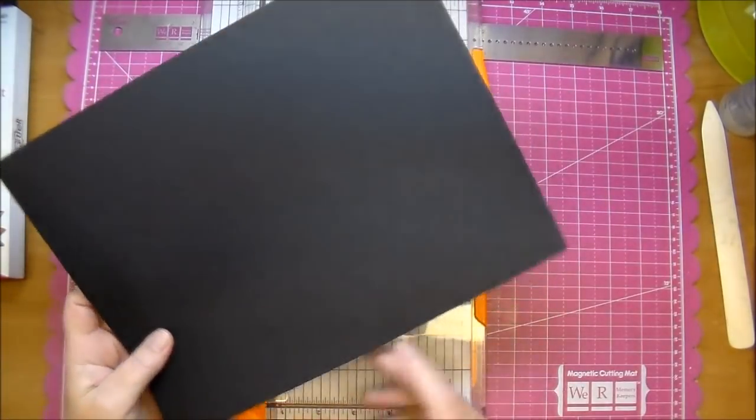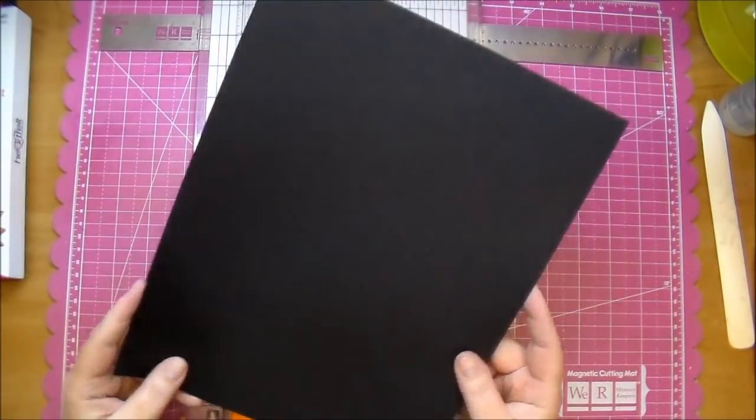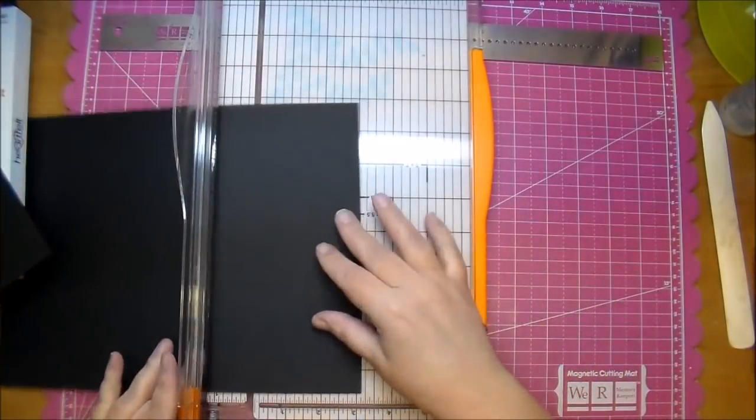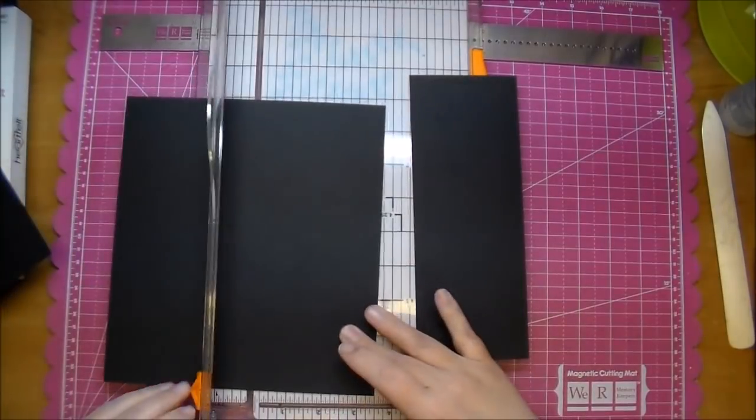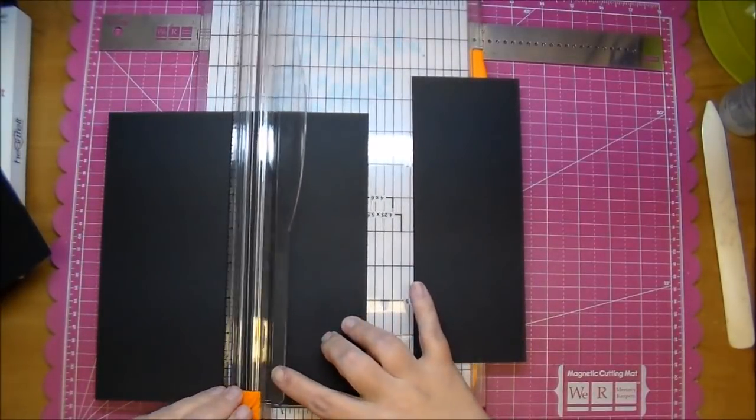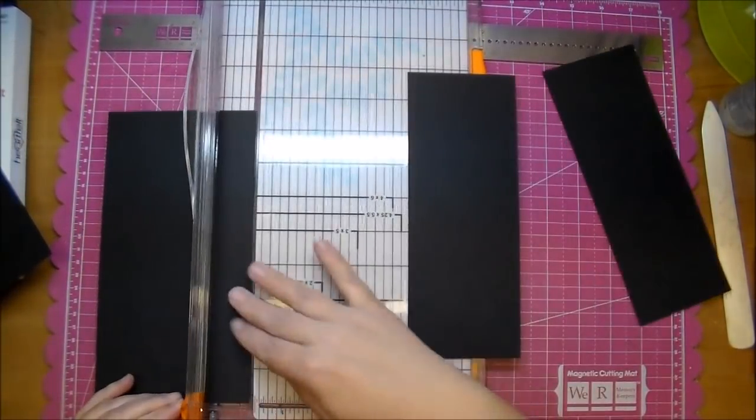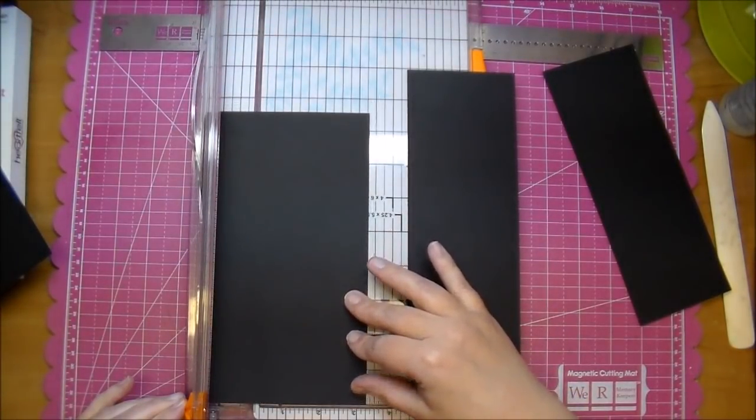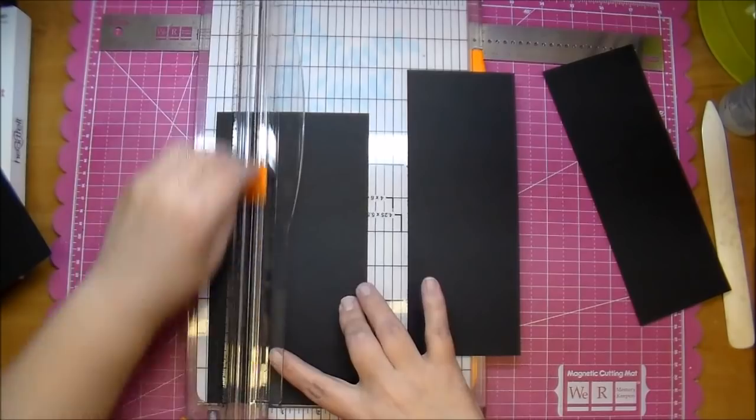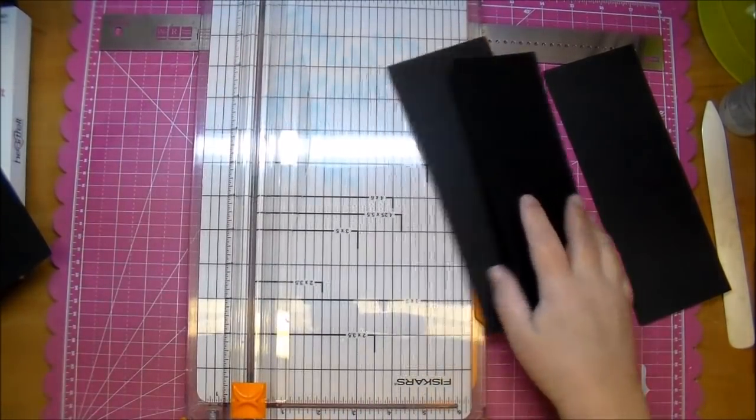We're not going to cut on the 8 1⁄2 inch side. We're going to cut on the long side at 3 1⁄4. We could get 3 of them out of an 8 1⁄2 by 11 inch paper.